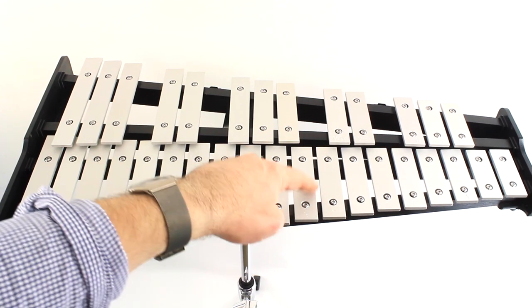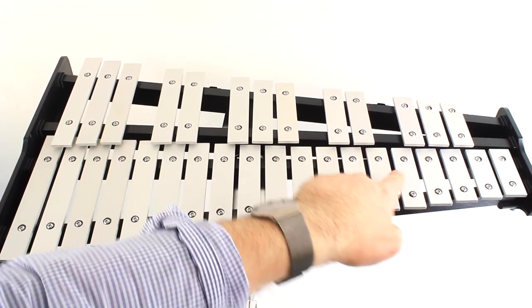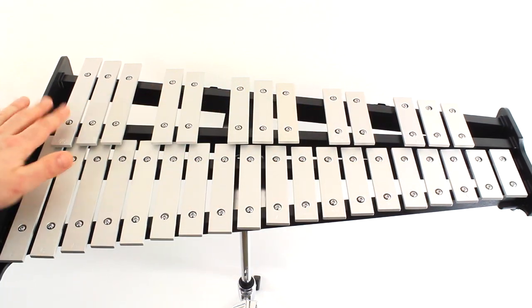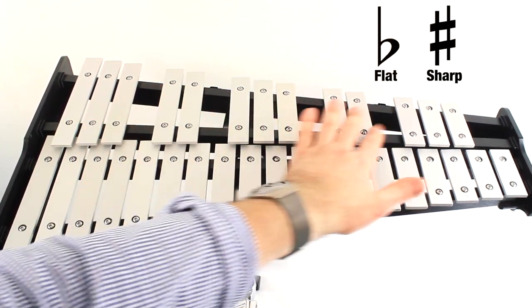And we go back to A, B, C, D, E, F, G. The notes of our upper row of bars are the flat and sharp notes.